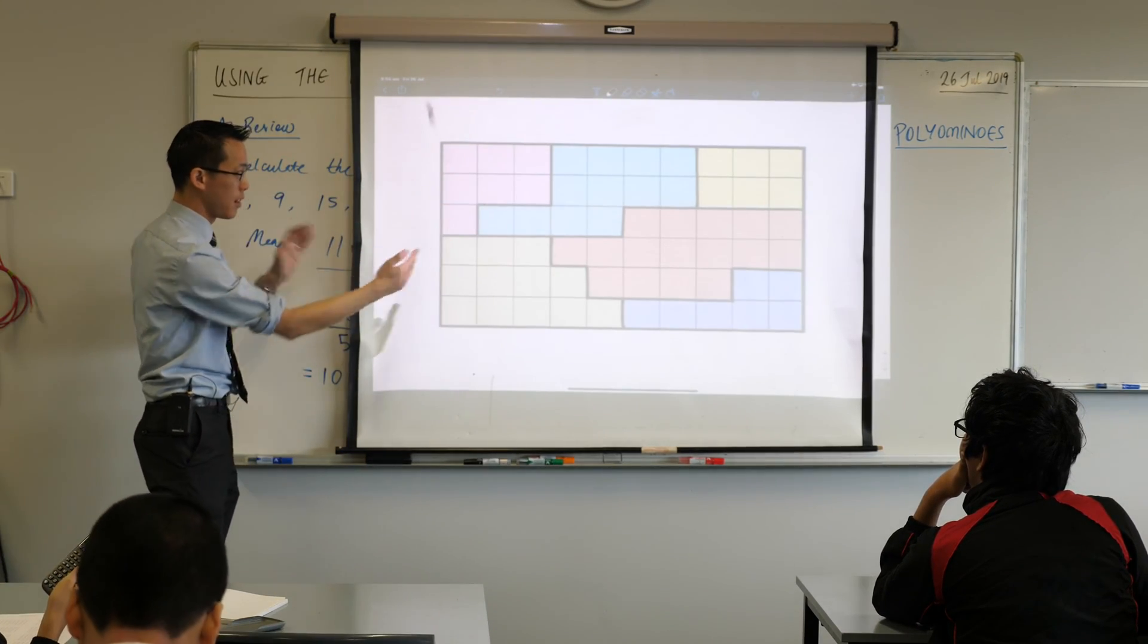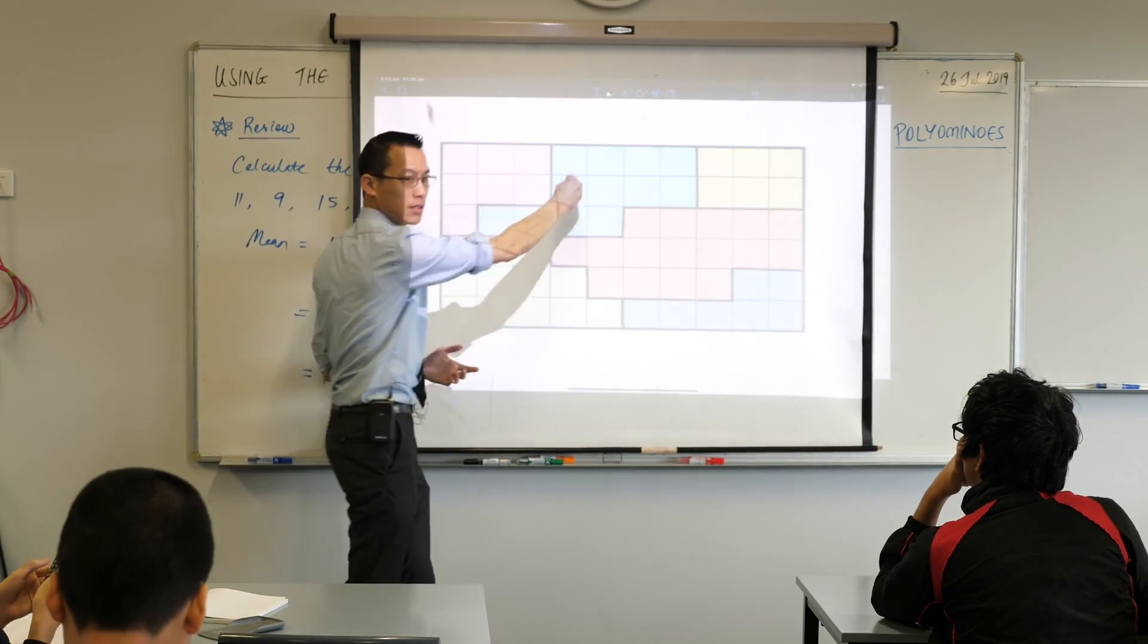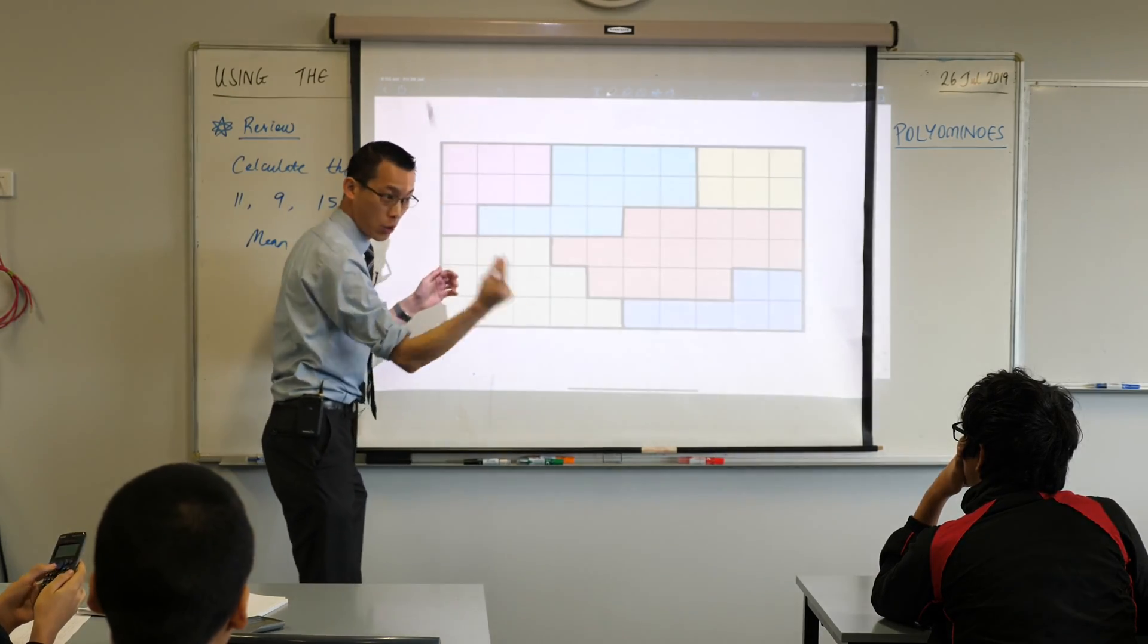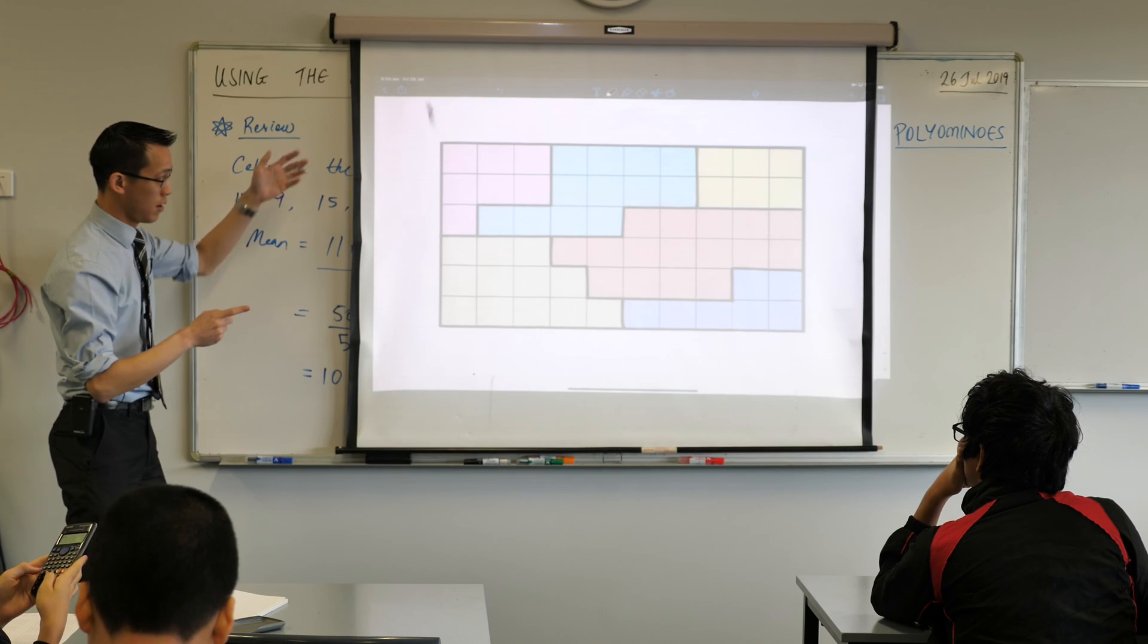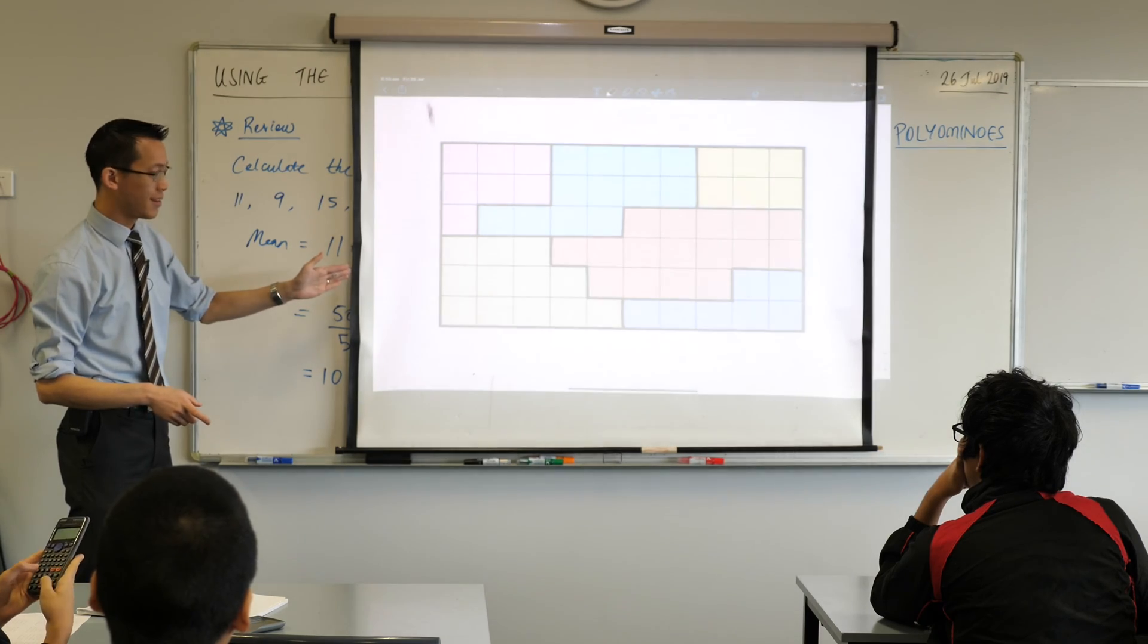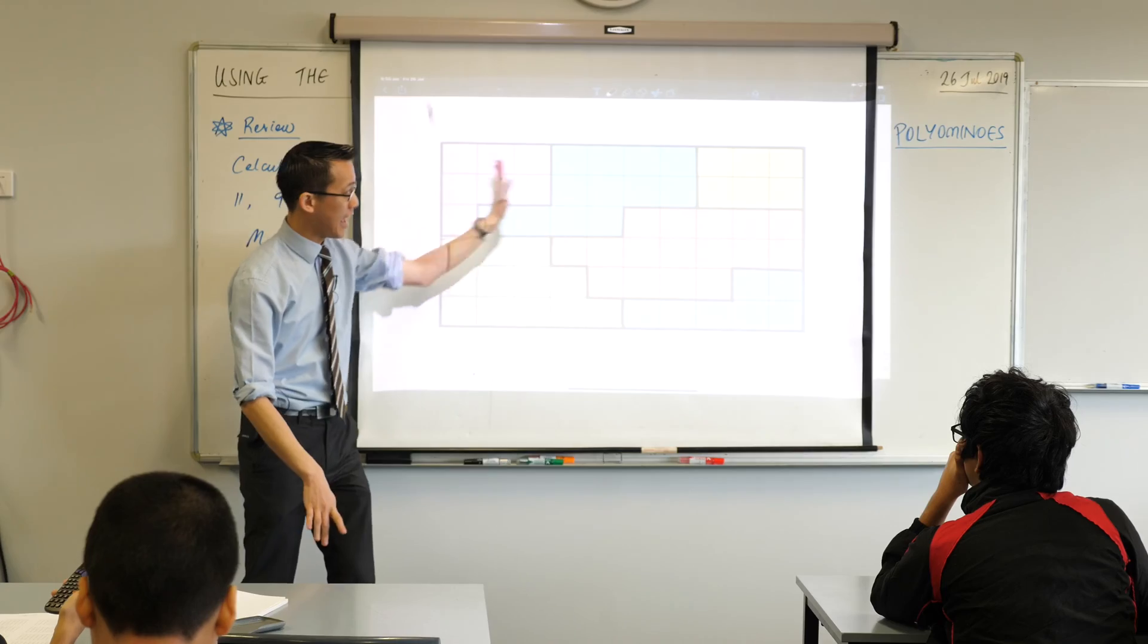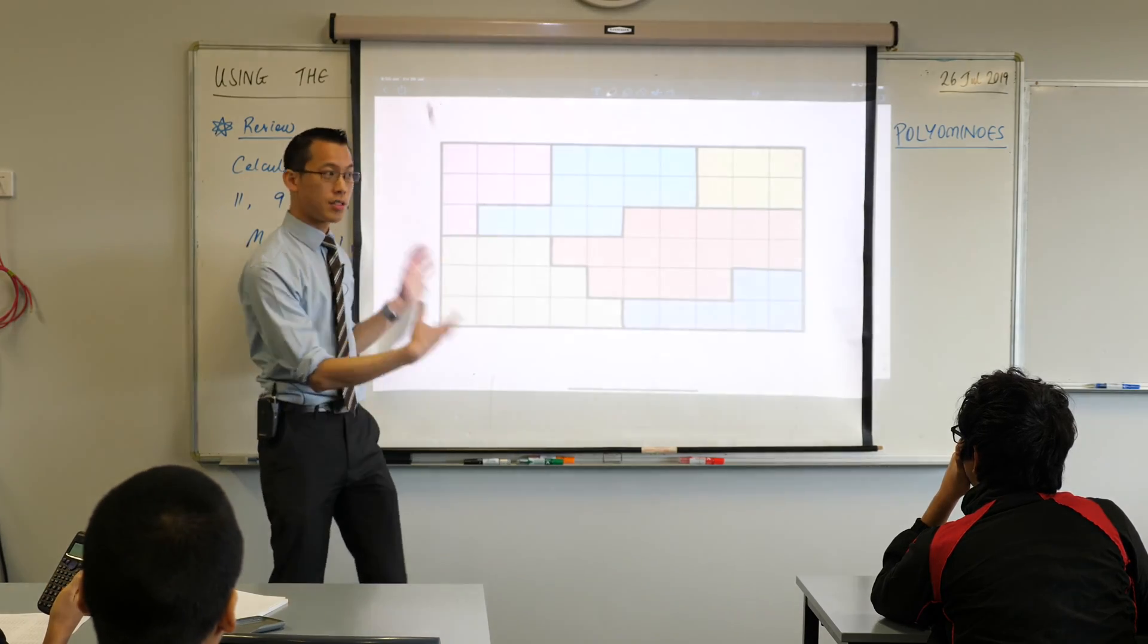Now, hopefully, if you have a look at this, because it's a rectangular array, without counting every single square, you can fairly quickly work out what the total is. That was the first step. What's the total number of squares? Sixty. Sixty, yeah? Do you agree? Six by ten, at least if I'm counting. So, there are 60 squares.